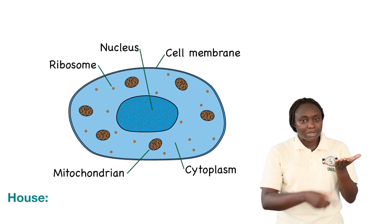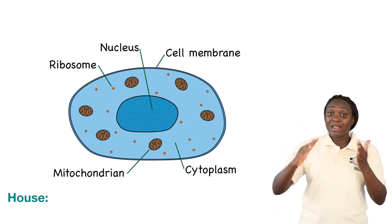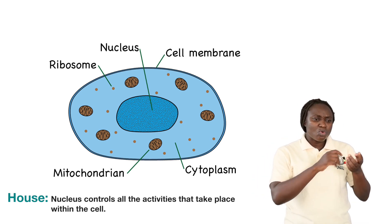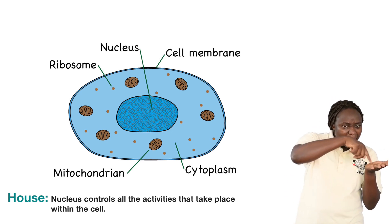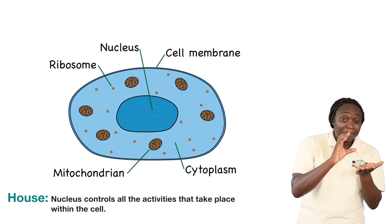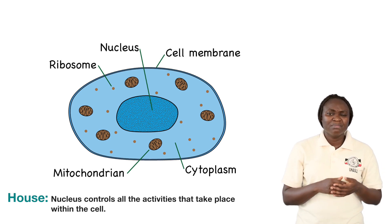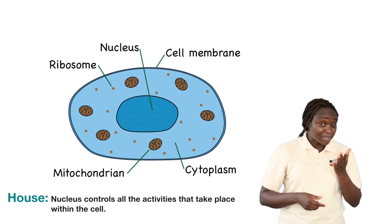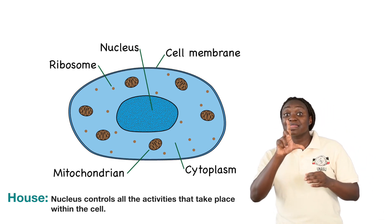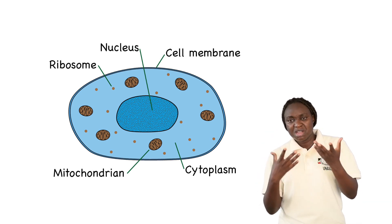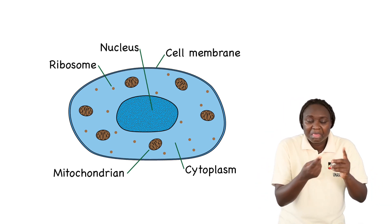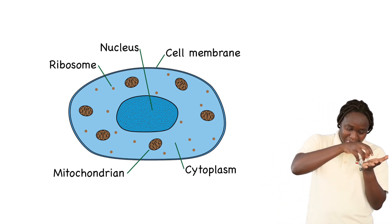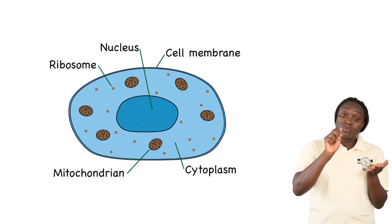The nucleus is similar to the house in the farm, and it controls all the activities that take place within the cell. If you remember what you studied in primary school, all living things have certain characteristics — several processes that all living things display. Those are the activities that take place within the cell, and the nucleus controls all of them.